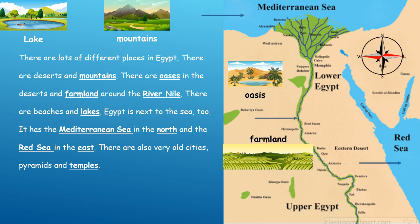In the north we have the Mediterranean Sea, and in the east we have the Red Sea. We are going to learn about these two seas.